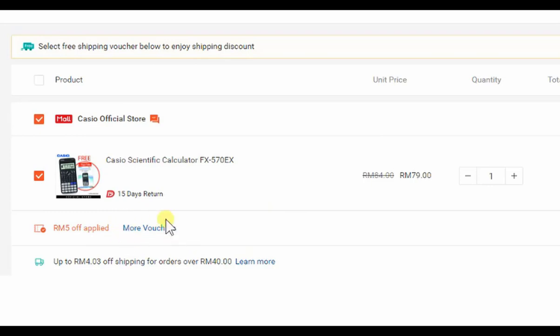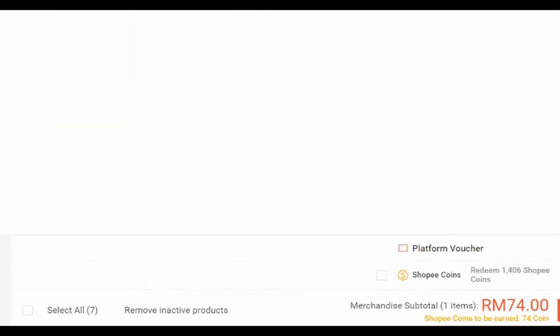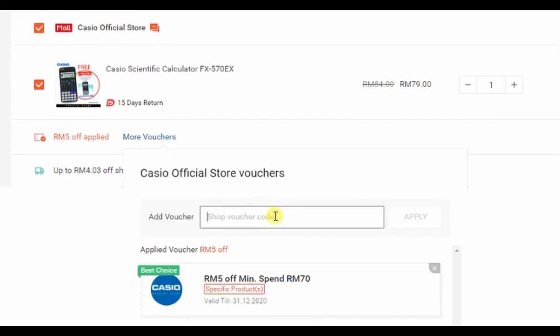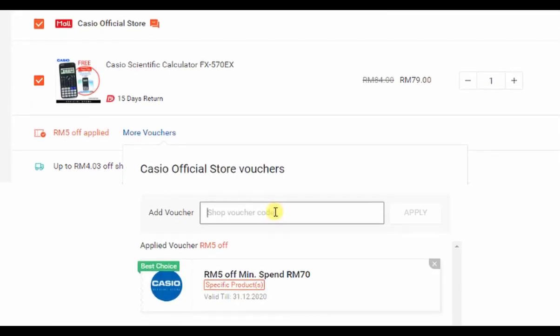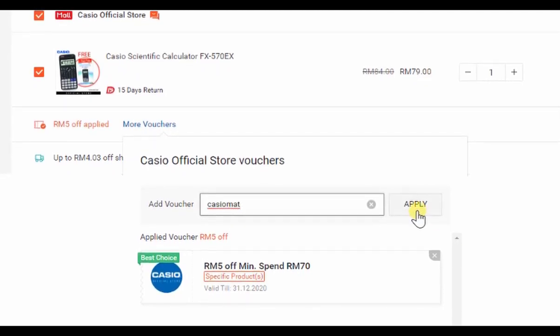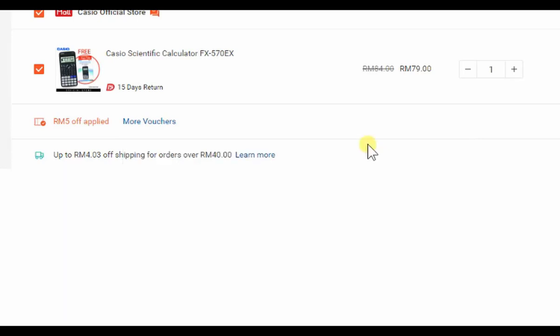And then over here, there's two places for you to insert your voucher code. First place is over here. You can see the more voucher. The second place will be over here, the platform voucher. The platform voucher is for the voucher provided by Shopee. And then this voucher is provided by Casio Malaysia. And then over here, you can insert the voucher code I provide, which is the Casio map. And then you just click on apply. I already applied. So you can see like 5 ringgit off, minimum spam of 70 ringgit. So after that, you should be able to see the price from 79 reduced to 74.